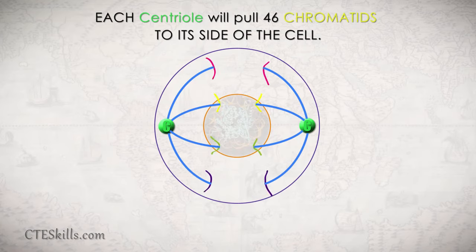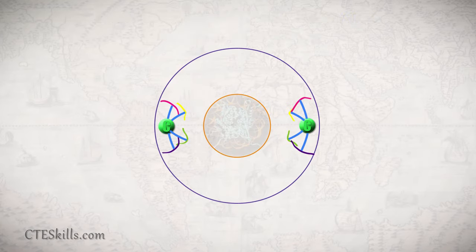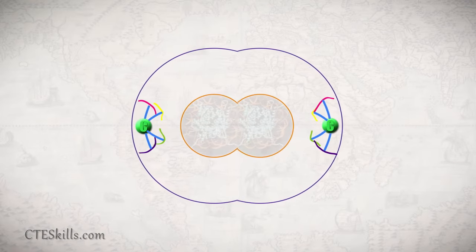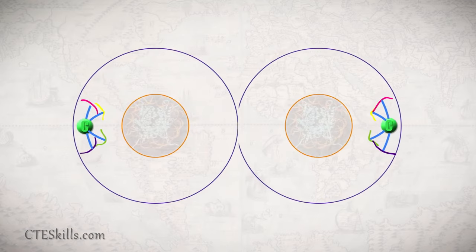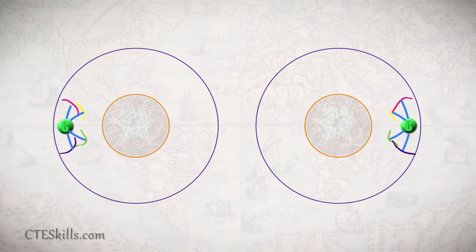Each centriole will pull 46 chromatids to its side of the cell. As the chromatids separate, the cytoplasm begins to split through the middle of the cell, and the cell membrane starts to come around to enclose the two newly made cells.